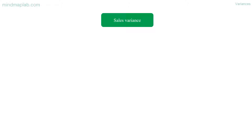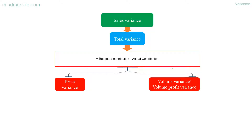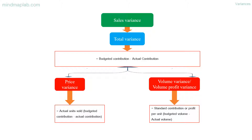Sales variance — total variance is the difference between budgeted contribution and actual contribution. Price variance is calculated as: actual units sold multiplied by the difference between the budgeted contribution and actual contribution. Volume variance (volume profit variance) is calculated as: standard contribution or profit per unit multiplied by the difference between the budgeted volume and actual volume.